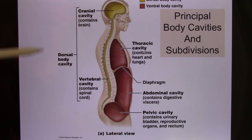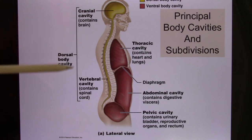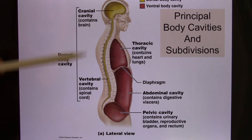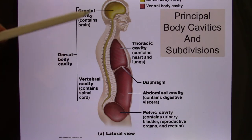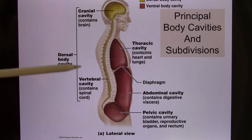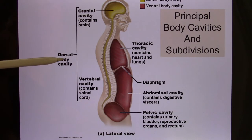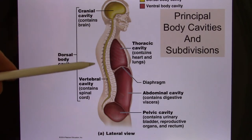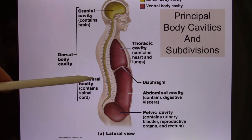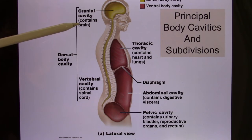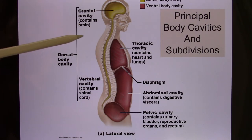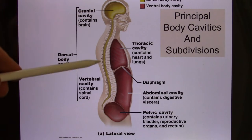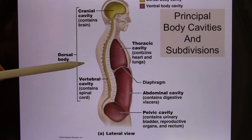Your dorsal cavity can be divided into the cranial and vertebral cavity. Both of them protect very important organs — your brain and your spinal cord. You cannot afford to let them get hurt. So there are two cavities in the dorsal.